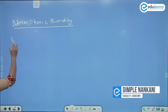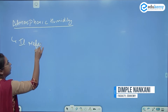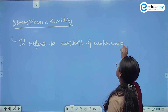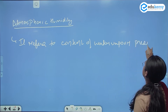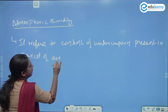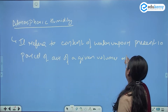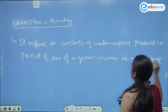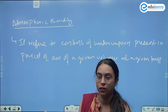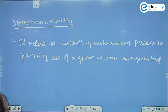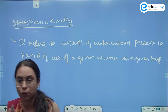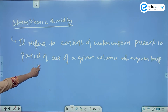Atmospheric humidity. Basically, it refers to the content of water vapor present in a parcel of air at a given volume and a given temperature. Atmospheric humidity refers to the content of water in a gaseous form in a parcel of air having a definite volume at a given temperature.